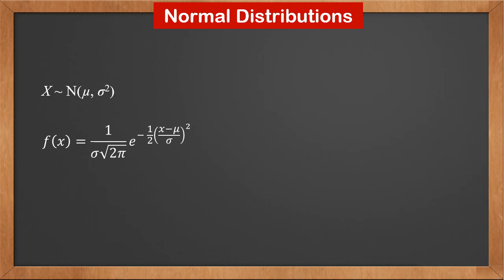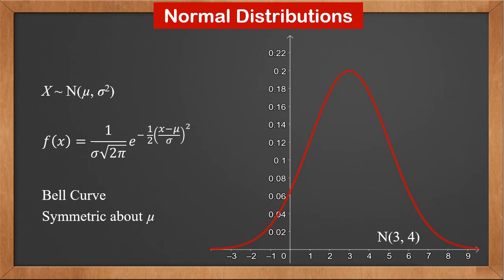The probability density function of normal distribution is this — you don't have to remember it. The graph of the probability density function is called a bell curve. It's symmetric about mu. Here is a graph of N(3, 4). You can see that it's symmetric about 3 and also has the highest probability at 3. Since it's symmetric about 3, half the values are less than 3 and half are greater than 3. So 3 is the mean, median, and mode.